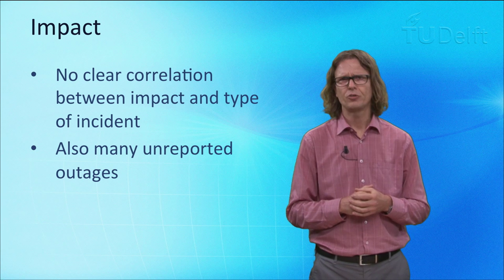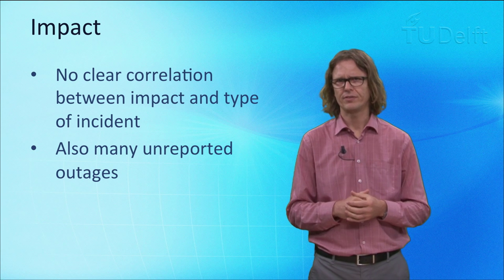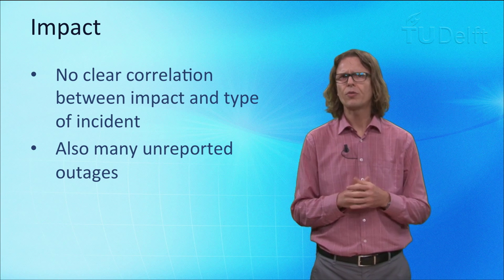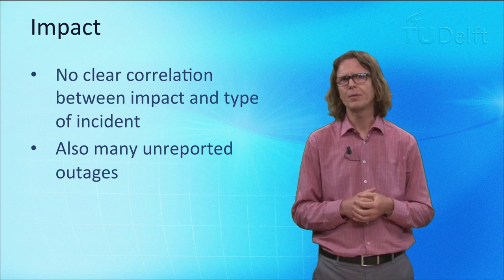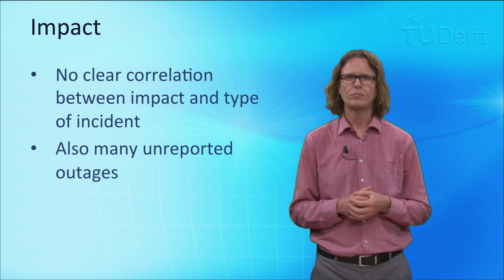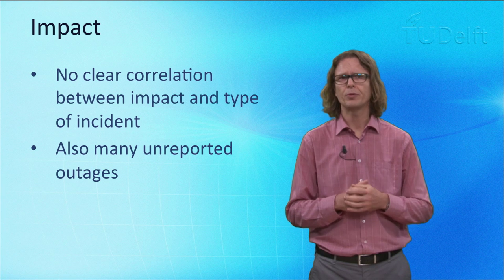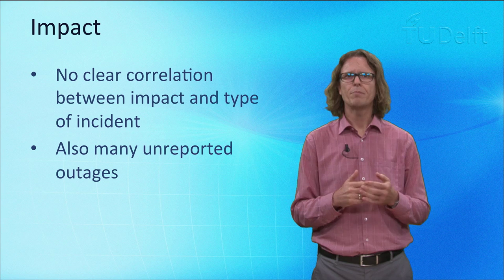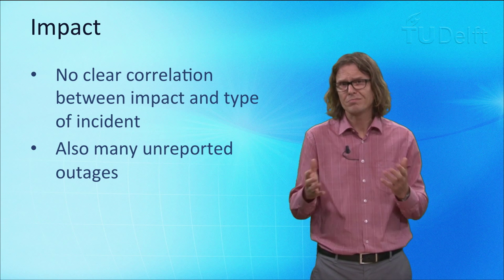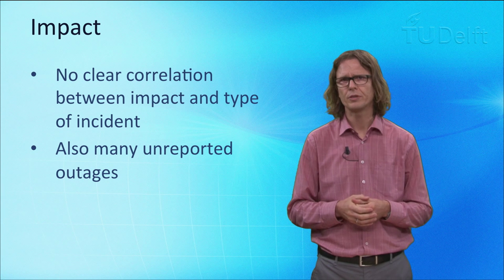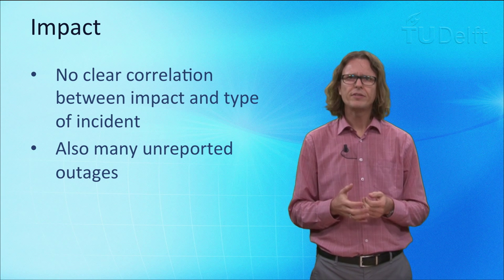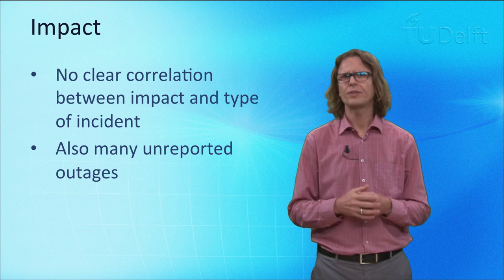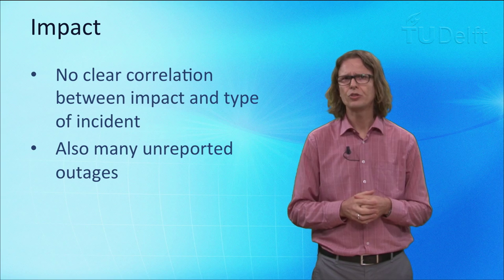There is no clear correlation between the impact and the type of incident — unintentional, targeted, or untargeted. For each of the three types there have been publicly reported major outages. But there is a large contingent of unreported incidents — we have no idea how many. It seems reasonable to assume that most incidents only have limited impact, and that this is part of the reason why they went unreported. In recent years, only a few large-scale outages have been attributed to ICT incidents, and even in those cases the evidence for attribution is scant.